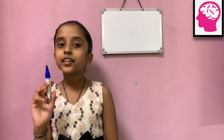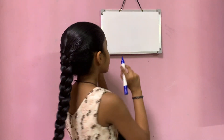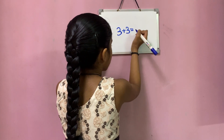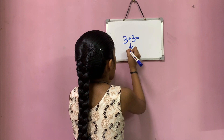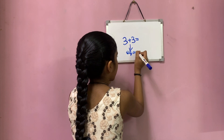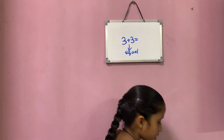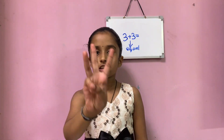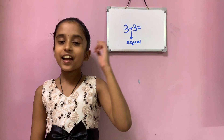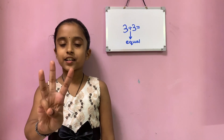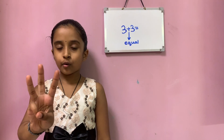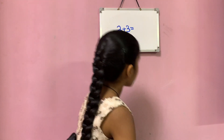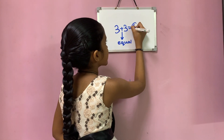Now let's see three plus three. Here both the numbers are equal. So you can keep one number in your mind and the other number on your fingers. So three in mind and three on fingers. Now let's forward count: four, five and six. So the total number is six.